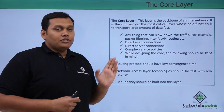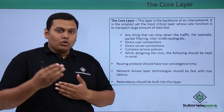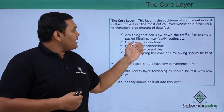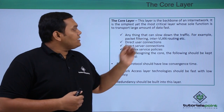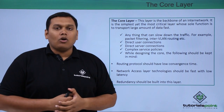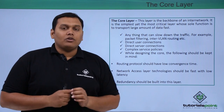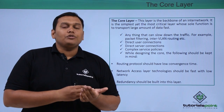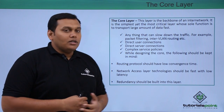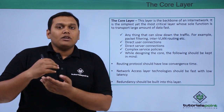In the core layer, anything that can slow down the network should not happen. For example, IP filtering, packet filtering, and inter-VLAN routing should not occur in the core layer. Direct user connections are not recommended in the core layer, and we cannot directly connect to a server — we should connect in a two-step or alternate way. Complex service policies are limited to some extent here.